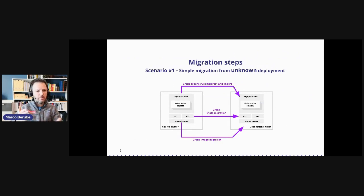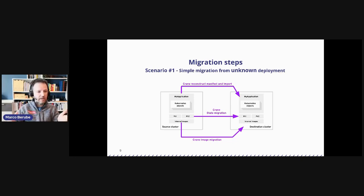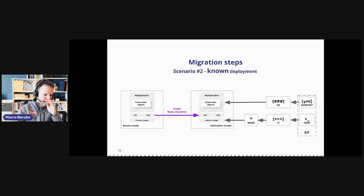Thinking about how a migration tool works: scenario one is the most simplistic migration pattern. You need to extract all Kubernetes manifests, fix them since they may have cluster-specific metadata, migrate state or PVs from one cluster to another, and handle images. As a first use case, you could use Crane to simply do that — which is also what MTC does today.